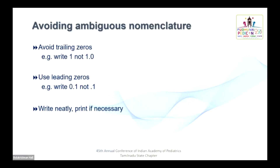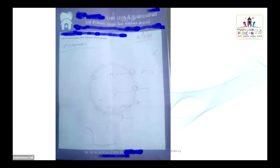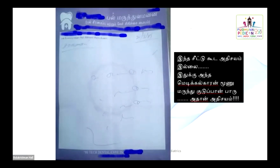We must avoid ambiguous nomenclature. For example, we should avoid trailing zeros — write 1, not 1.0, as this will create confusion. We should use leading zeros — write 0.1, not .1, as it will produce error. We should write neatly and print if necessary. An illegible prescription may still be dispensed by a pharmacist, which is a serious concern — we should not receive such comments about our prescriptions.